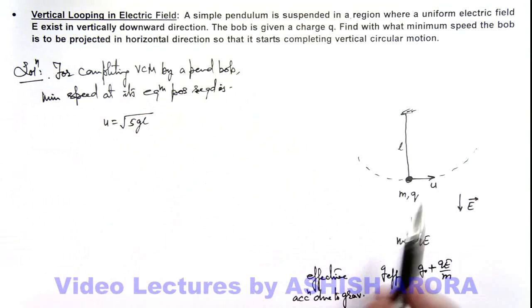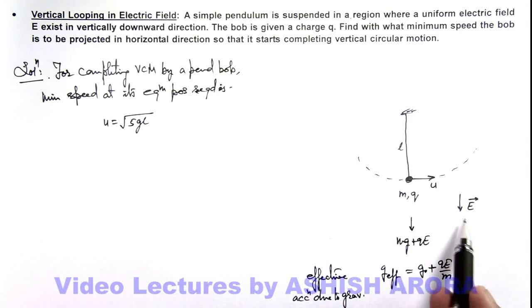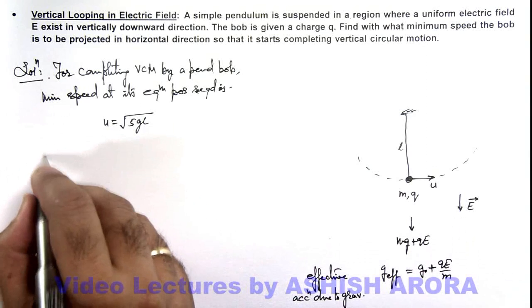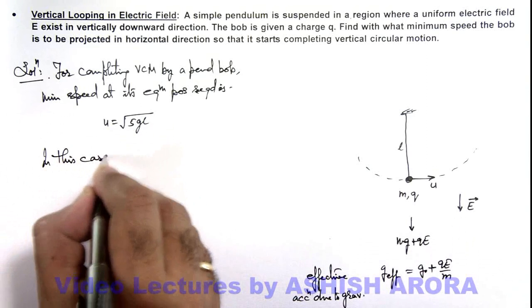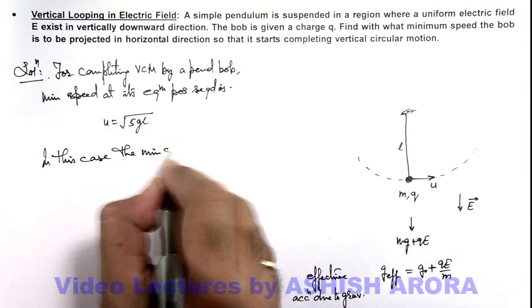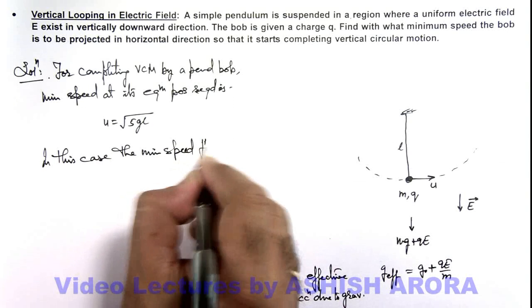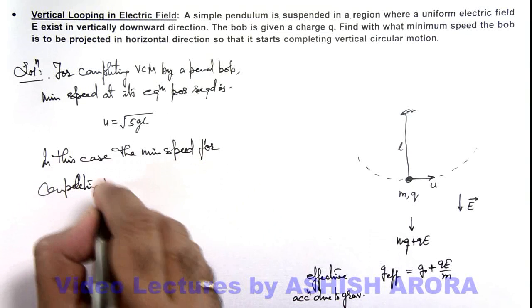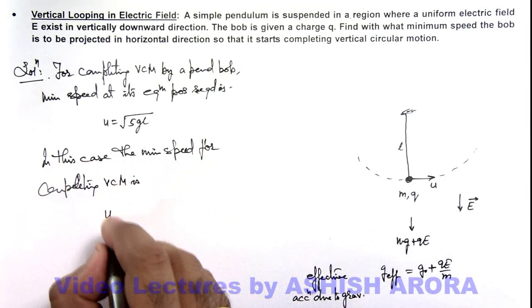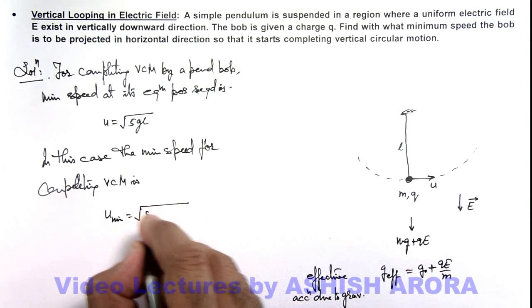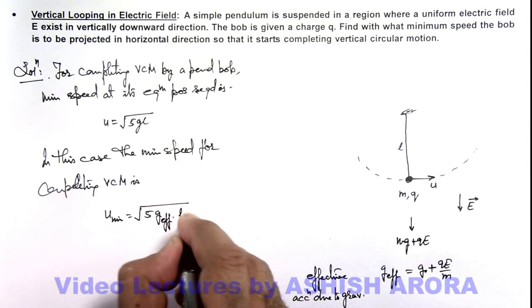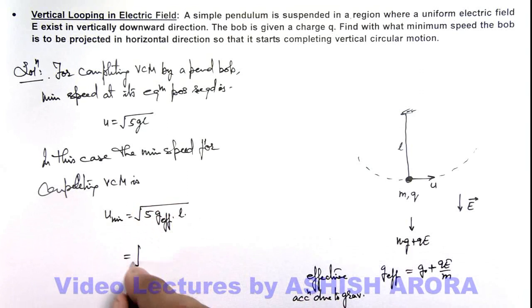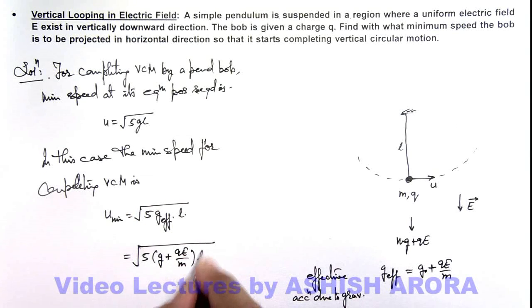And here in this situation, g is increased because of electric field, so here we can write: in this case the minimum speed for completing vertical circular motion is this minimum speed we can write as root of 5 g effective times l. So we can substitute the value of g effective, that'll be here 5 times (g plus q E by m) multiplied by l. That'll be the result for this problem.